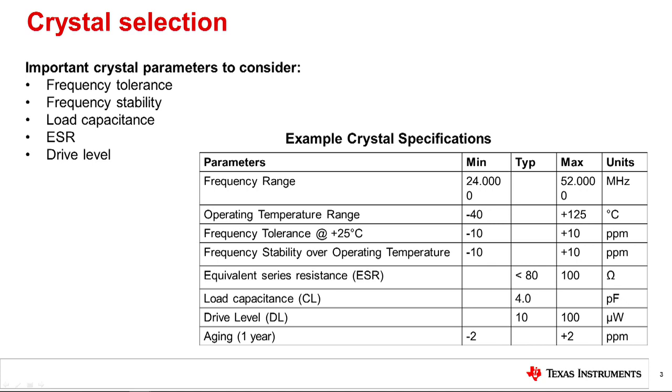Let's now talk about some of the important parameters to look at when selecting a crystal. Frequency tolerance is the initial accuracy of the crystal frequency in parts per million, typically specified at 25 degrees Celsius. Frequency stability is the drift of the crystal frequency over temperature, usually specified over the full operating range of the crystal. Be sure to select a crystal with operating temperature range that matches your application. Load capacitance is specified by the crystal vendor. ESR is the effective series resistance of the crystal. Drive level represents the maximum allowable power dissipated by the crystal.